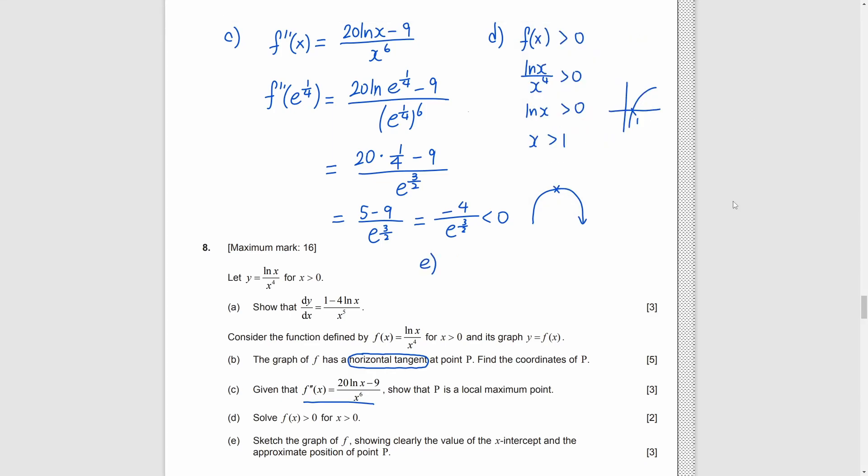For part E, finally, we need to sketch f. We mark p first. By looking at its coordinates, it must be in the first quadrant. Its x-intercept is 1. And, it is only positive after 1. So, it's negative before 1 and it obtains p afterwards. After that, it turns back and keeps decreasing but never touch the x-axis again.